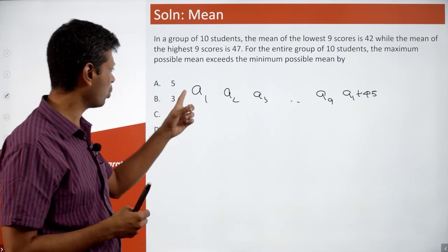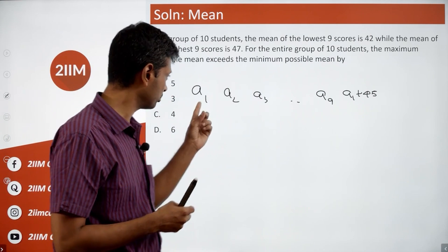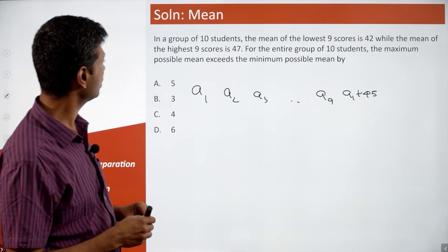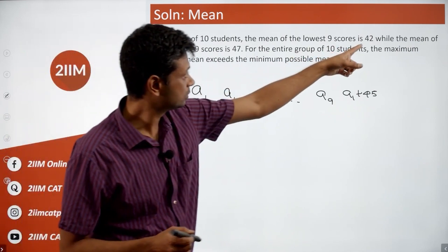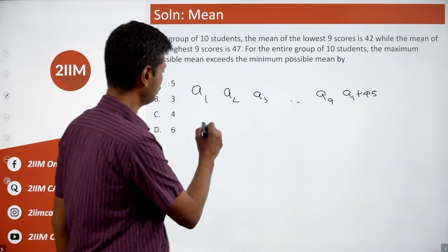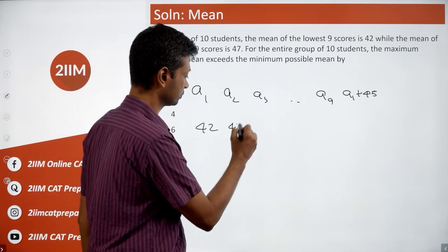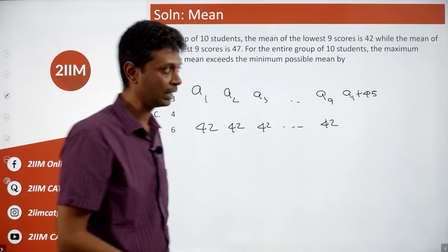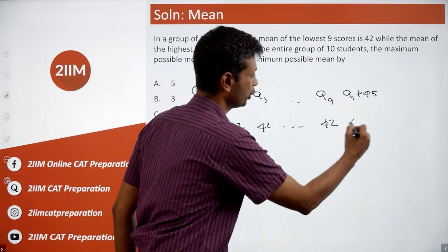Very simple idea: going from a1 to a1 plus 45, I want the first 9 scores to be as low as possible. So I can have one instance where each of these numbers is 42, and that last number will be 42 plus 45, which is 87.